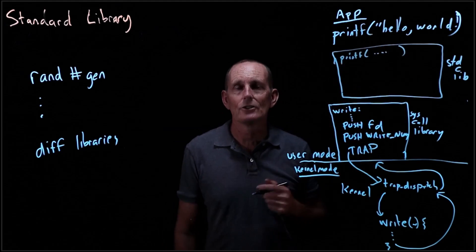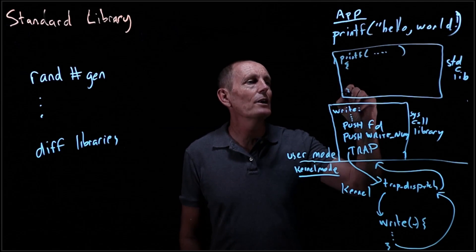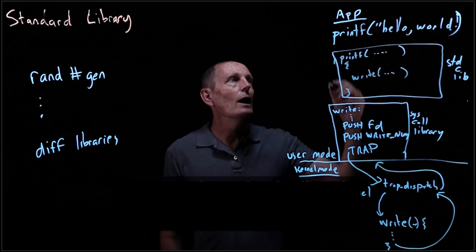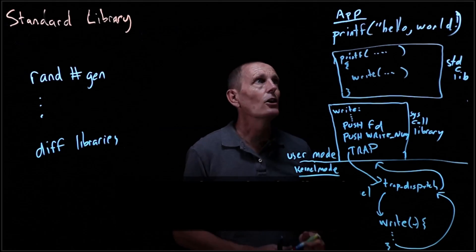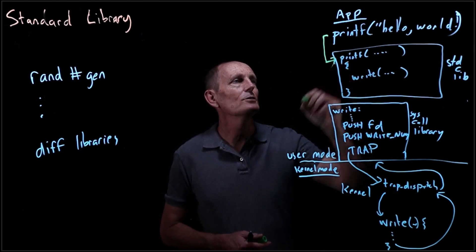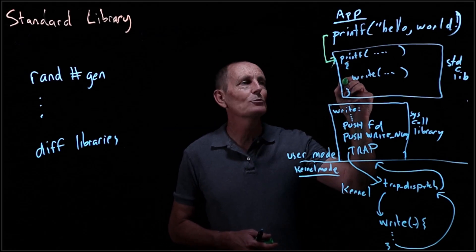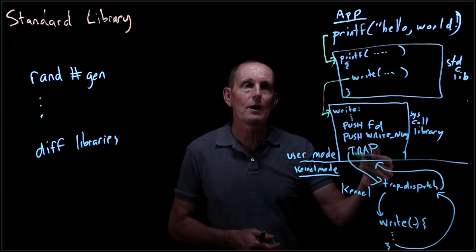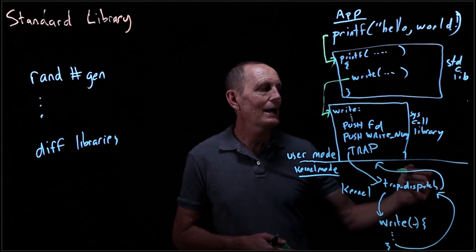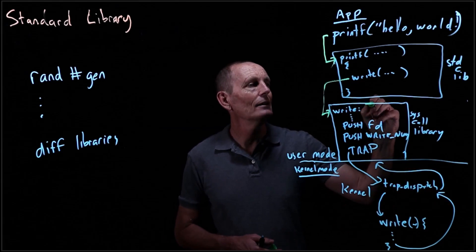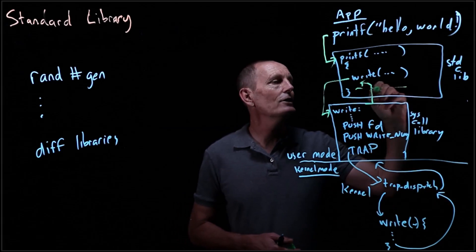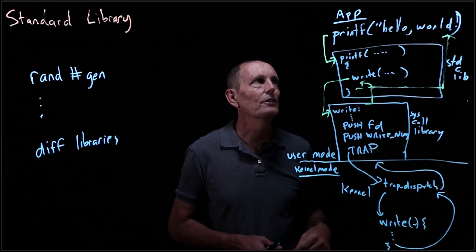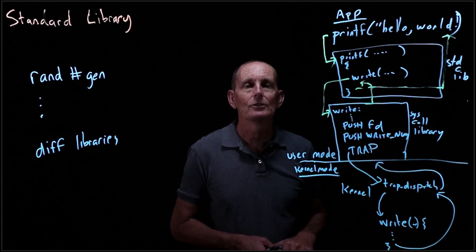printf has some parameters — in fact, it's unusual because it has a variable number of parameters. Somewhere down in printf will be a call to write. So what we know is that the call from the application calls into printf, the call from write inside printf goes into our system call library, and then that eventually calls a trap into the kernel. Then we come back from write and return from the printf implementation back into our code.